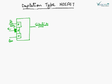This is the channel. Here the substrate is of P type and the channel is N type.